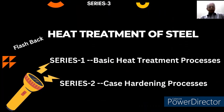Before the main topic, let me give you a flashback of my previous series on Heat Treatment. Series 1 covered basic heat treatment processes including the iron-carbon diagram, TTT curves, CCT curves, and processes such as annealing, normalizing, hardening, and tempering. In Series 2, I described various case hardening processes such as carburizing — solid, liquid, or gas — induction hardening, nitriding, and flame hardening.